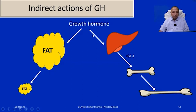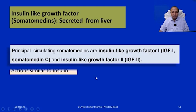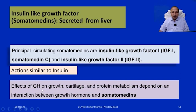The indirect action of growth hormone is primarily mediated via somatomedins, also called insulin-like growth factor 1 (IGF-1), released by the liver. The principal circulating somatomedins are IGF-1, and in utero, IGF-2 is also important. They are called IGFs because their actions are similar to insulin. Their effect is primarily on growth cartilage and protein metabolism. It is the interaction between growth hormone and these somatomedins that drives growth.